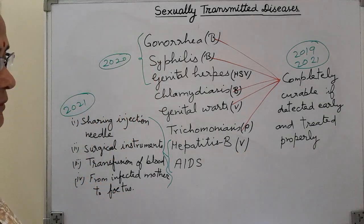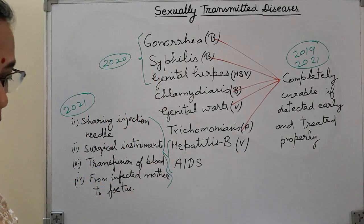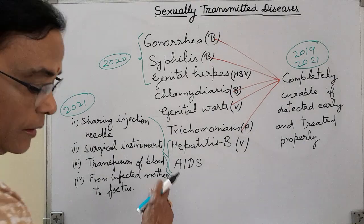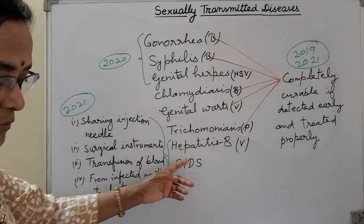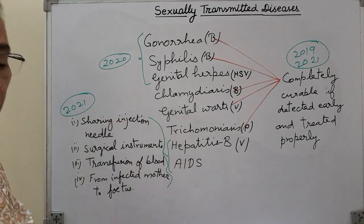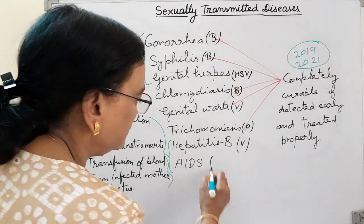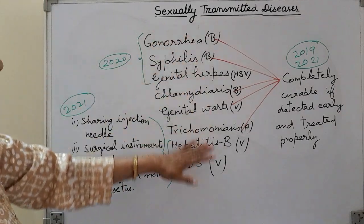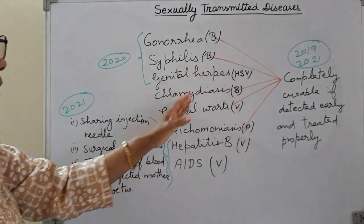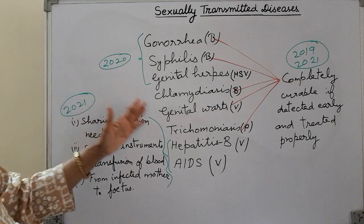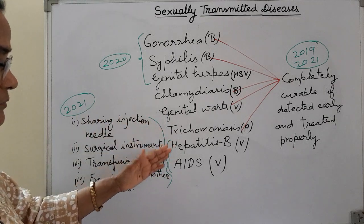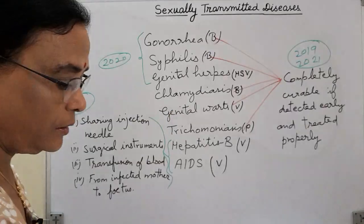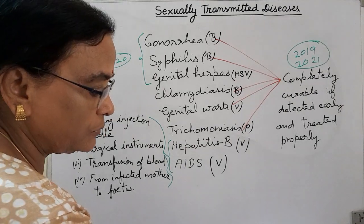Hepatitis B is a serious liver infection that may be acute or chronic, but a vaccination is available for it. AIDS stands for Acquired Immunodeficiency Syndrome. It is important to know which diseases are completely curable and which ones, like HIV/AIDS, are not.